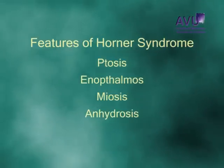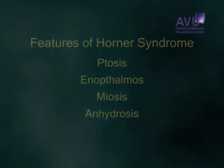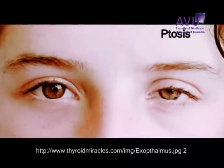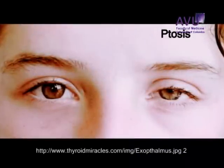Horner syndrome can be caused by either pressure exerted by a retrosternally extended goiter or by malignant infiltration of a thyroid carcinoma. The features of Horner syndrome are ptosis, enophthalmos, miosis, and anhydrosis.